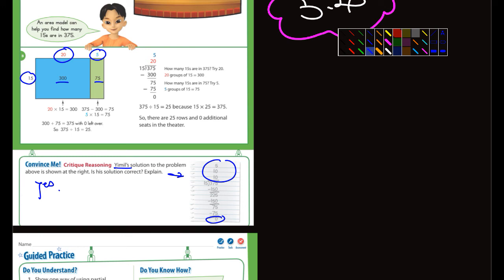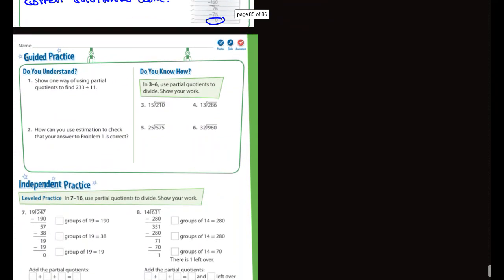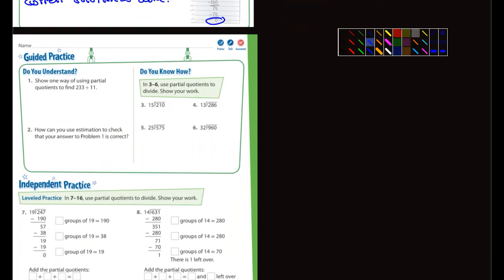Let's see here. Well, he has the same correct solution as above. I'm happy with that. I mean, he's coming up with the same thing. I'm not sure I can explain his thinking. But anyways, let's move on here. I'm not too worried about that one. The guided practice. Let's take a look at that. So it's show one way of using partial quotients to find 233 divided by 11.